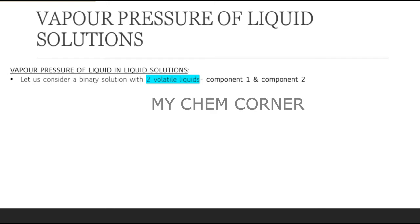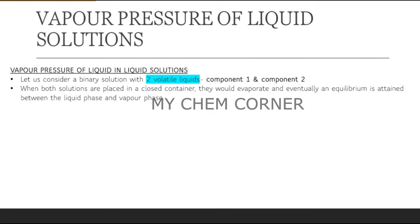Liquids which can vaporize when kept open in air without any external factor are called volatile liquids. When both these liquids are placed in a closed container, over time there will be movement from the liquid phase to the vapor phase. Some of the solution goes to the vapor phase and some comes back to the liquid phase, continuing until equilibrium is attained.